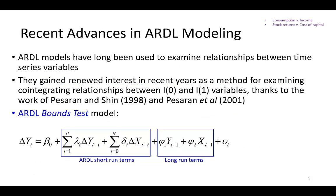ARDL modeling gained renewed interest in recent years as a method for examining cointegrating relationships when dealing with a mix of I(0) and I(1) variables — variables that are stationary at level and those that are stationary only after first differencing. The credit goes to Pesaran and Shin, and also Pesaran, Shin, and Smith (2001). Their significant contribution is the bounds test approach for examining whether a mix of I(0) and I(1) variables nevertheless have a long-run relationship. The model is broken into two components: the traditional ARDL short-run terms and the long-run terms.